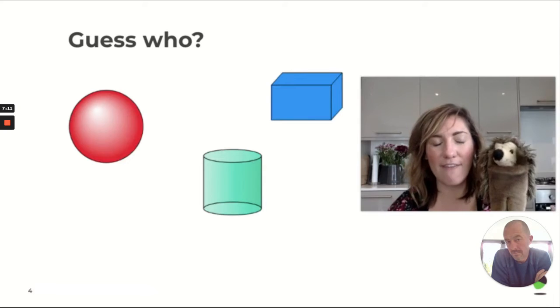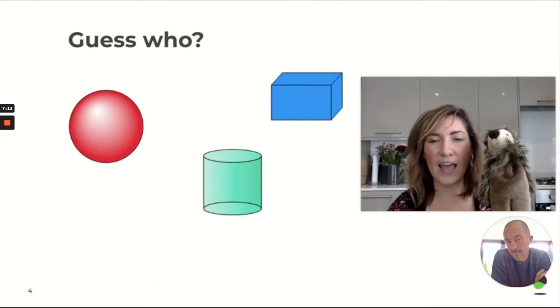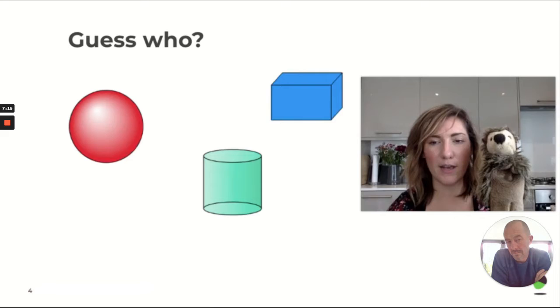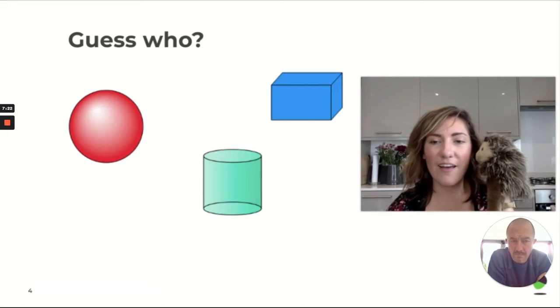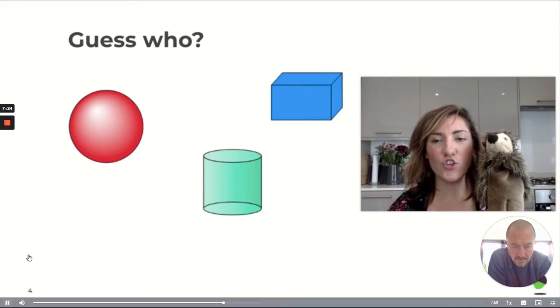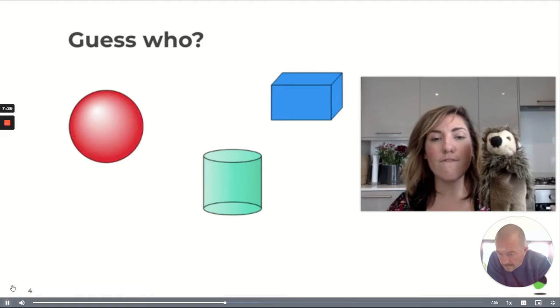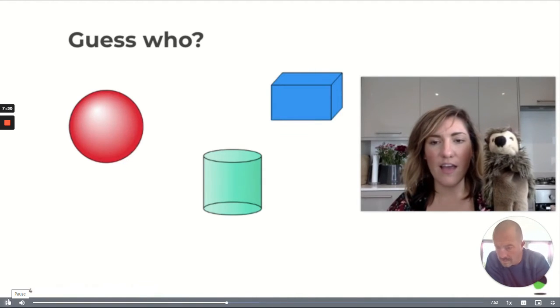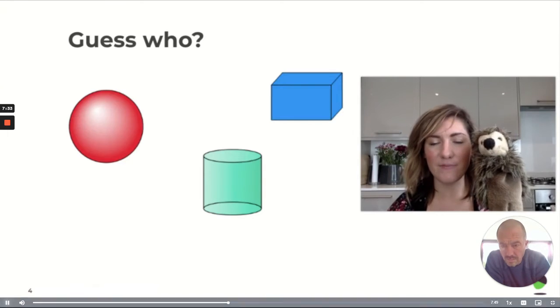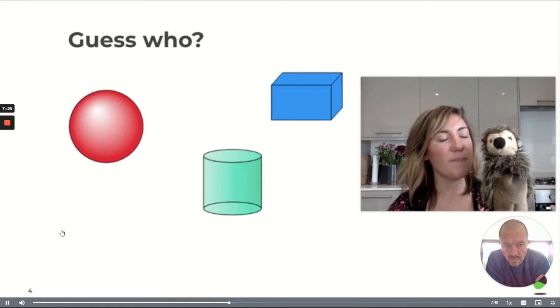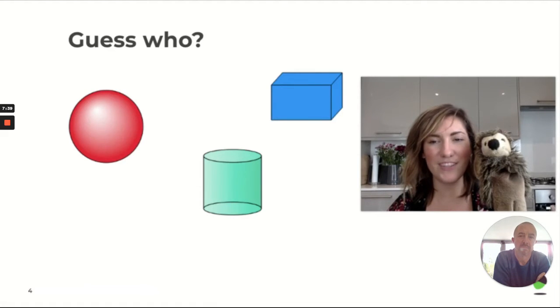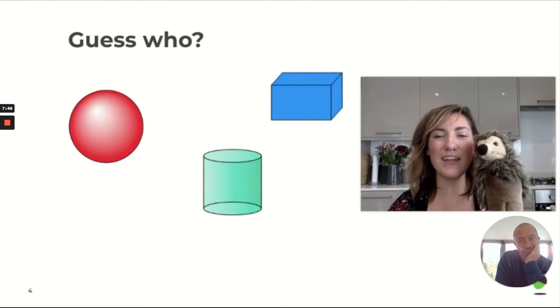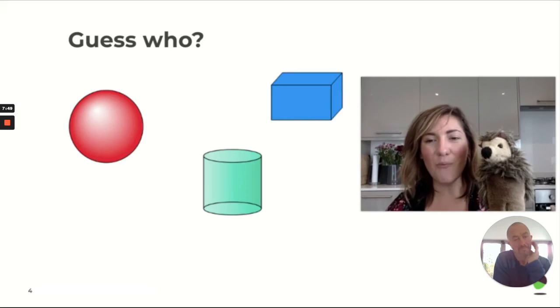All right. Now there's two more shapes up there. Harold's going to have another think again. And he's going to describe it to us. Are we ready? All right. This time, okay, this shape has no vertices and no flat faces. This shape has no vertices and no flat faces. Point to the shape you think it is. If you pointed to the red sphere, well done. You're so right.